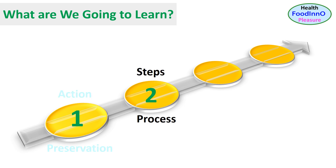Second, what is processing? Generally, a process is defined as the sequence of events and equipment systems required in producing a product. In the case of processed foods, steps are taken to improve quality in terms of safety, nutrition, desirable sensory characteristics, and convenience, as well as shelf life.